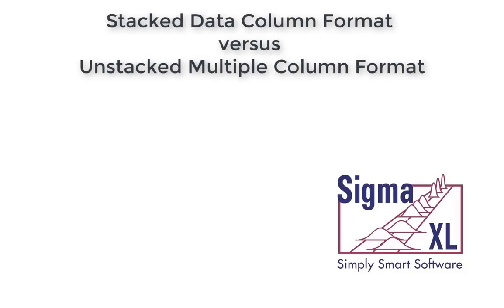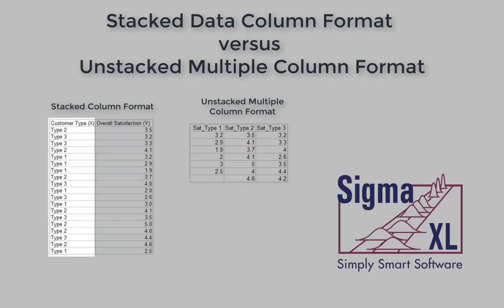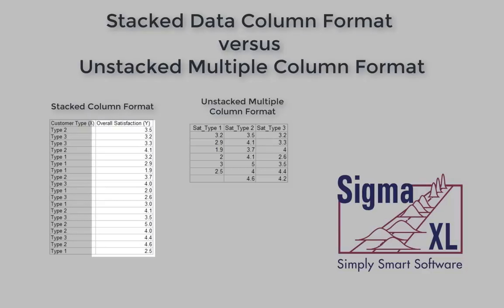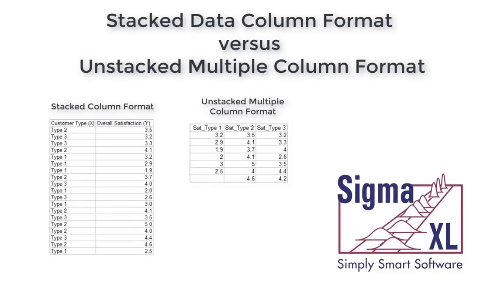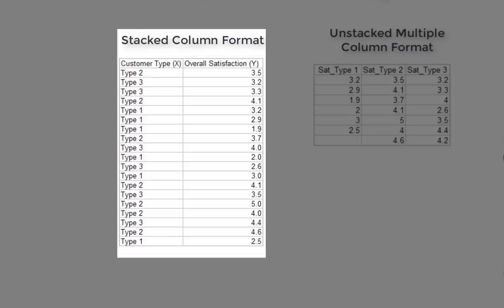SigmaXL can accommodate two data formats, either stacked column and unstacked multiple column. The stacked column format has an X column, also referred to as the group category column, and a Y column that contains the data of interest. Here's an example of data in stacked column format with three unique groups of customer type.